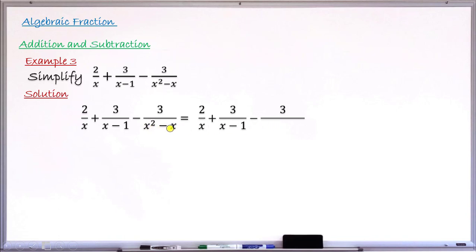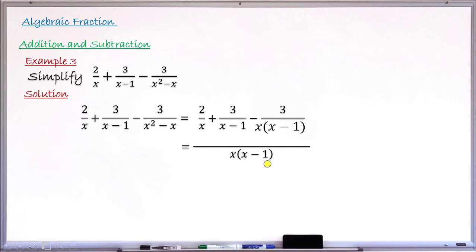Only the third denominator x²−x is factorisable. Dividing both terms by x gives x(x−1). So the factorized denominators are: x, (x−1), and x(x−1). The LCM is the product of the different highest factors: x and (x−1), so the LCM is x(x−1).